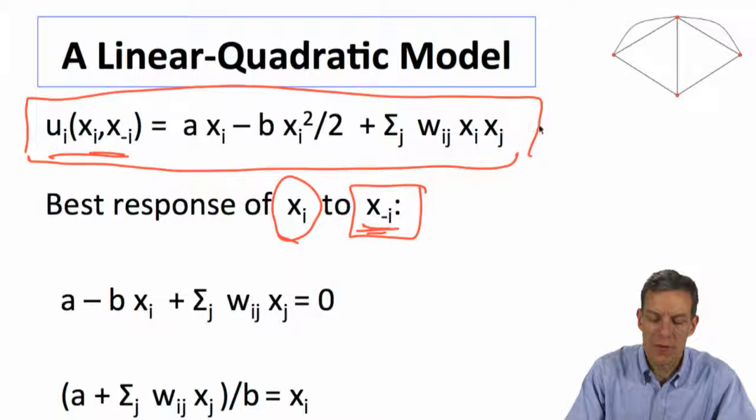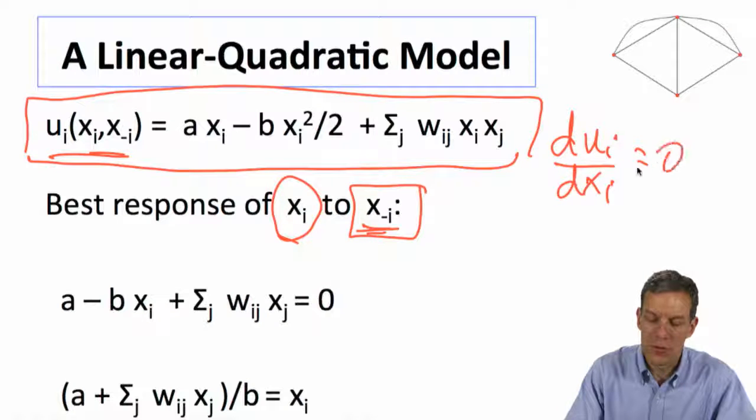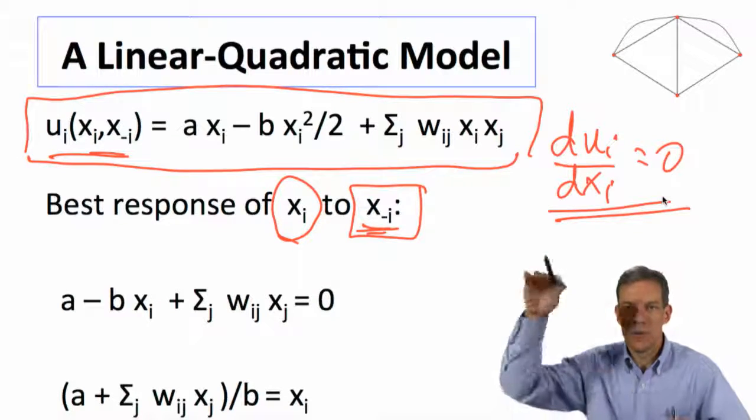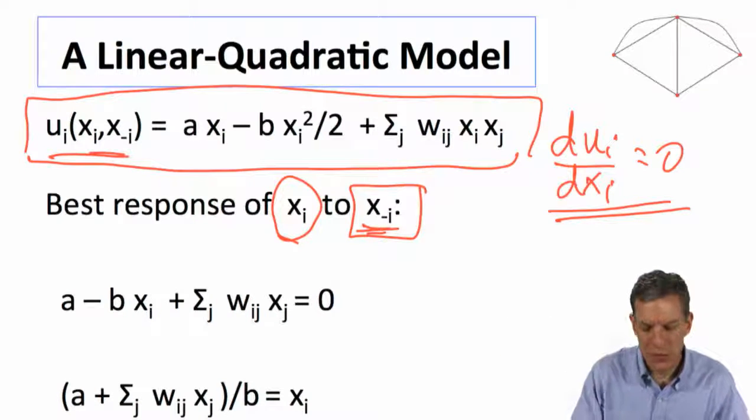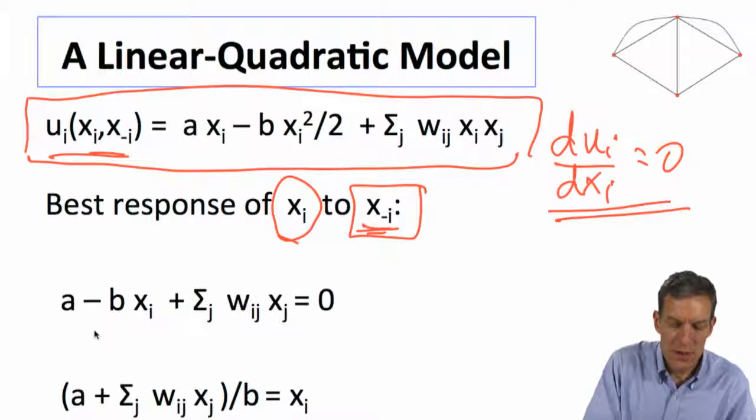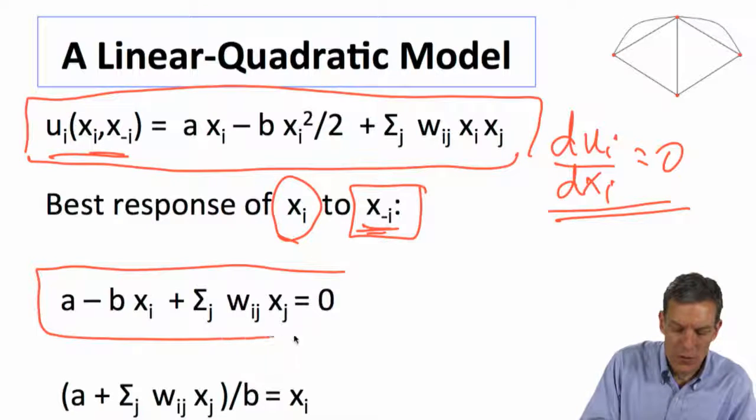set that equal to 0, and that gives you the maximizer here. Okay, and so we've got a nice function that's going to be necessary and sufficient in this case. So when we go through and solve this, when we look at the first-order conditions,